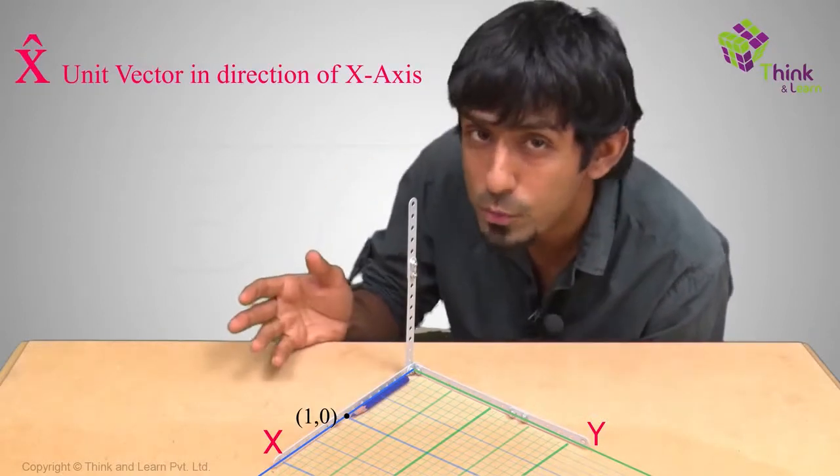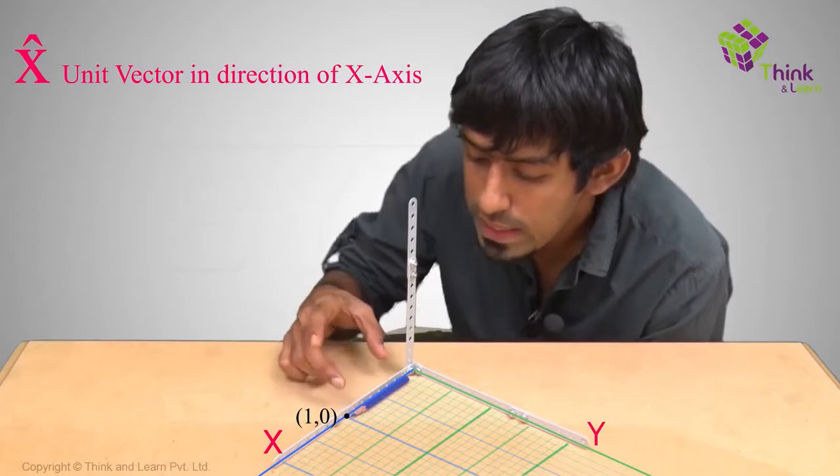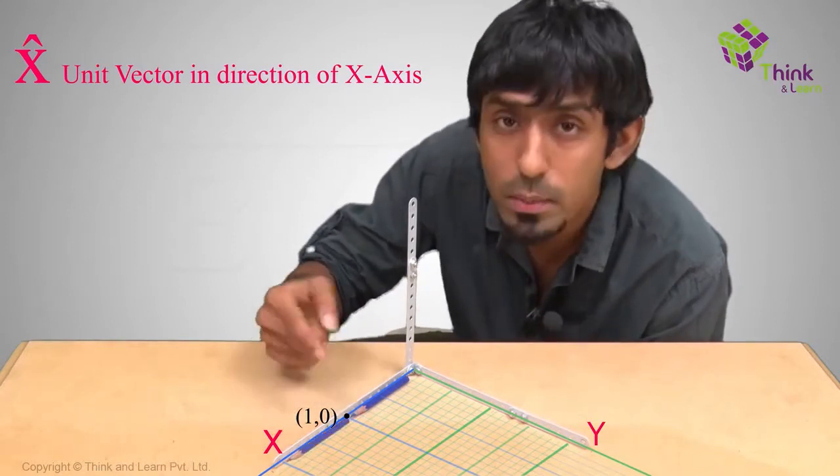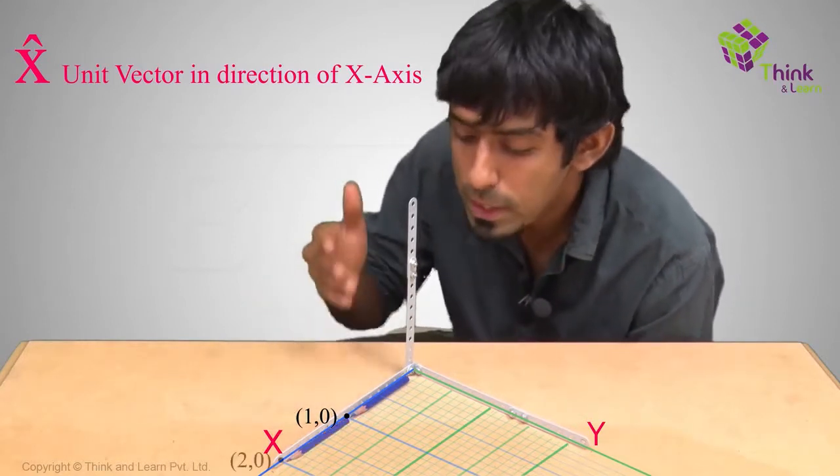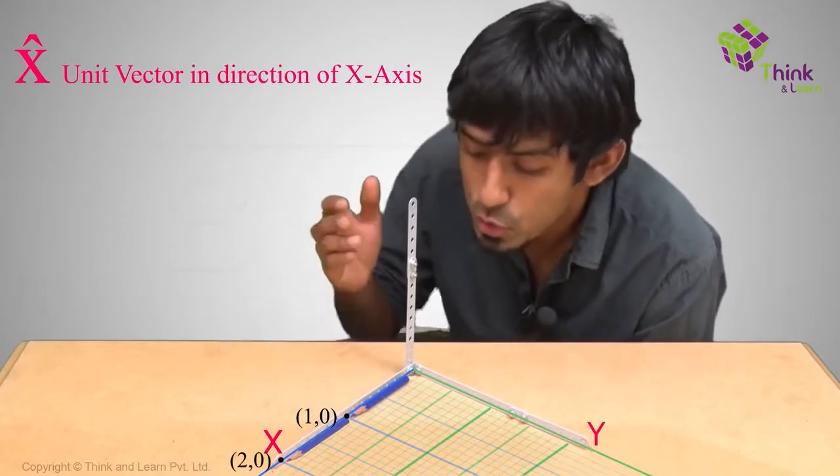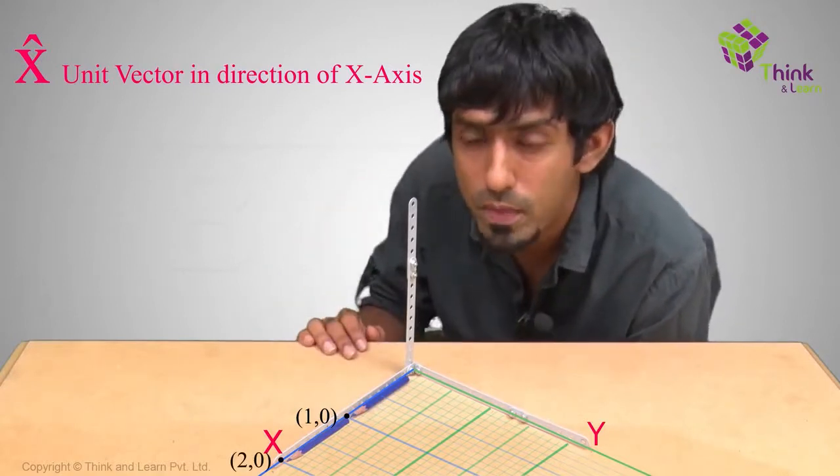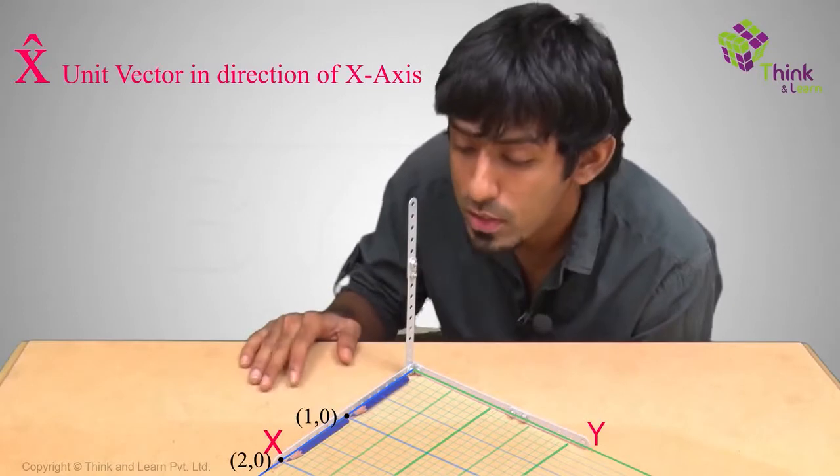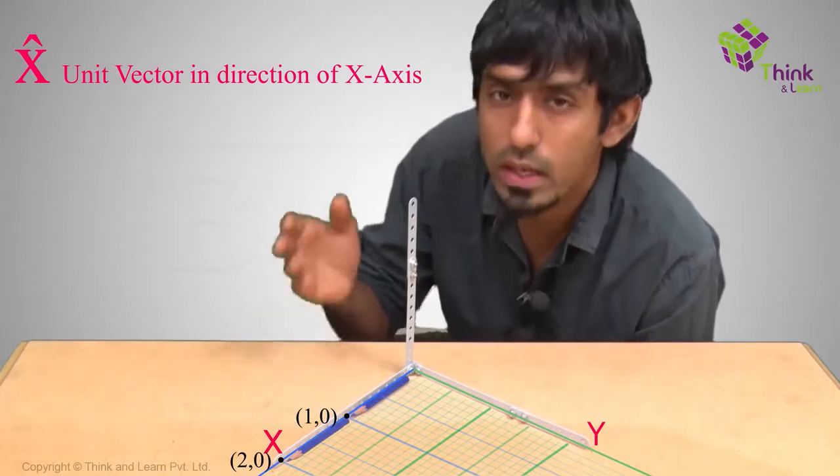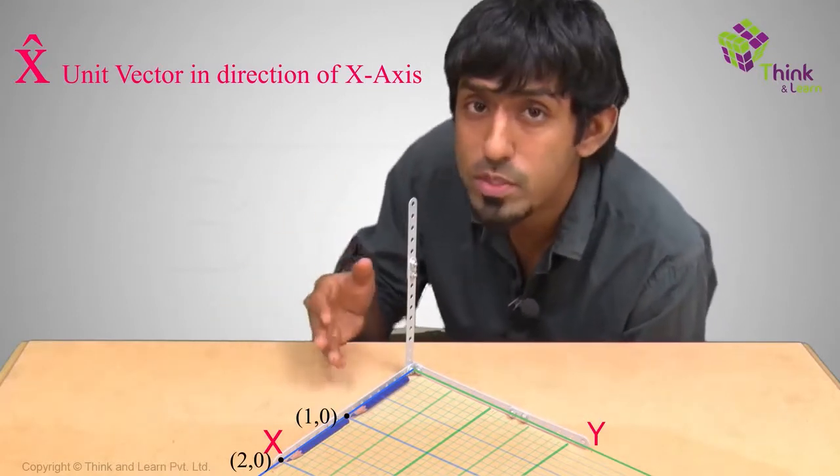If I want to refer to 2, 0, what do I do? I can lengthen this vector, make it double its length, and how do I do that? By multiplying it with a scalar, right? So 2 times x cap will give me the point 2, 0. So if I want to refer to 2, 0, I can either say 2, 0 or say 2 times x cap.